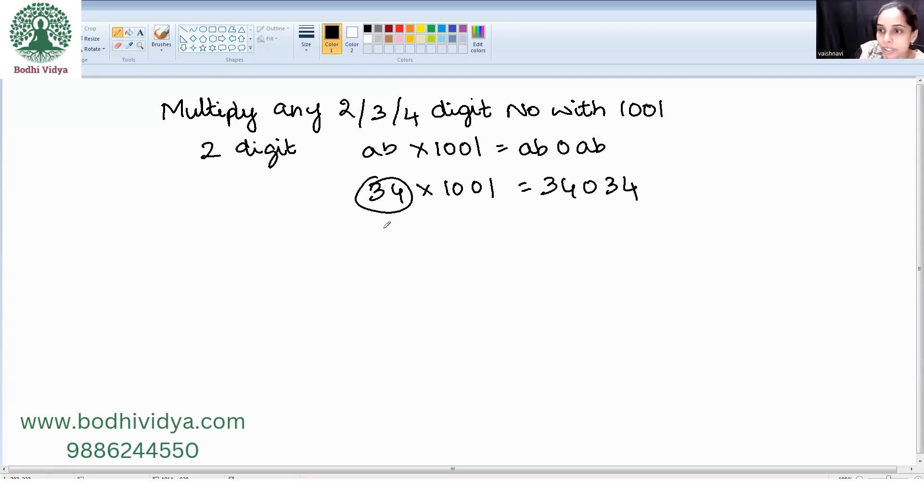One more example: 87 into 1001 is 87087. So easy, right? In just one step, we get the answer. 79 into 1001 is 79079.